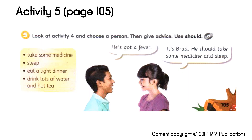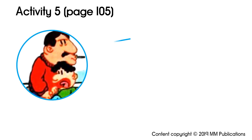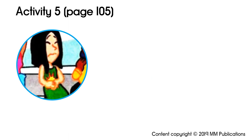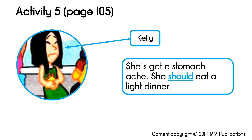Activity 5: Look at activity four and choose a person. Then give advice. Use 'should.' He's got a fever — it's Brad. He should take some medicine and sleep. He should also drink lots of water and hot tea. This is Kelly. She's got a stomachache. She should eat a light dinner.